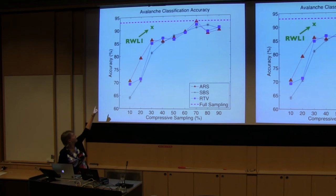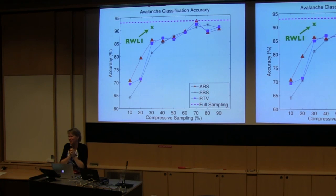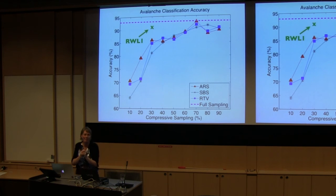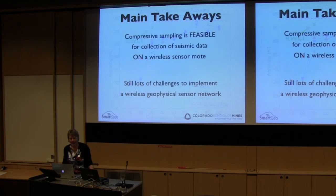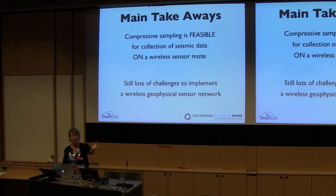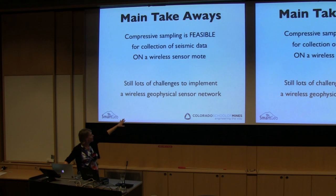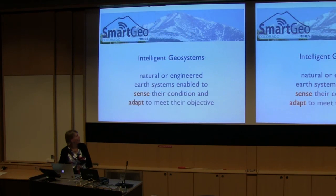With just 30% of the data, we can get only 1.7% off of full sampling for predicting avalanches. But we haven't yet figured out how to implement that algorithm on the little mote — we're still working on that, as it requires a bit more resources. The main takeaway is that compressive sampling is feasible within our domain, within SmartGeo. Maybe compressive sampling might be useful in your field as well, but we still have a lot of challenges to implement the goal of intelligent geosystems.